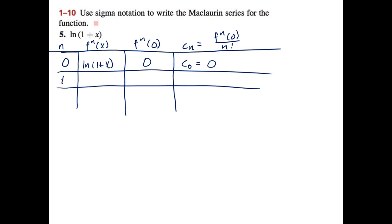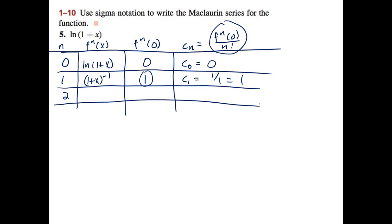When n=1, the first derivative of ln(1+x) is 1/(1+x) = (1+x)^(-1). Evaluated at 0: 1^(-1) = 1. So c₁ = 1/1! = 1. When n=2, bring down -1, giving -(1+x)^(-2). Evaluated at 0: -1. So c₂ = -1/2! = -1/2.